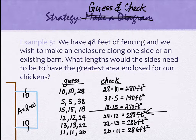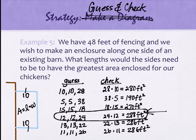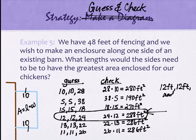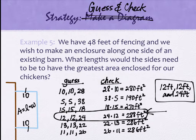If you stop at just having the table, you haven't exactly answered the question. You've done all the hard work, but the question asked what lengths the sides need to be to have the greatest area enclosed. The answer, with units, is: 12 feet, 12 feet, and 24 feet.